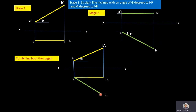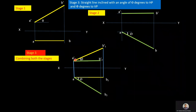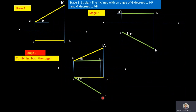At B2, draw projector vertically up to get front view. At A', draw a line parallel to XY — that line cuts the projector at B2'. Here, A'B1' and AB2 are the true lengths. A'B2' is the front view with reduced length; AB1 is the top view with reduced length. The line makes angle theta to HP and phi to VP.